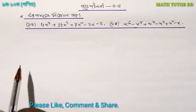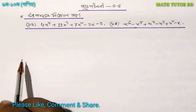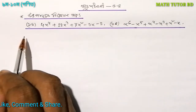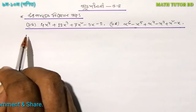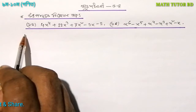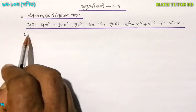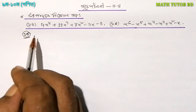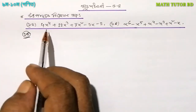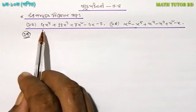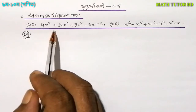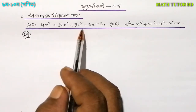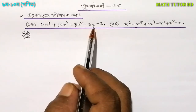Let's start with the first question. I'm going to talk to you about the number. The expression is: 4x to the power 4, plus 12x to the power 3, plus 7x squared, minus 3x, minus 2.